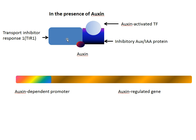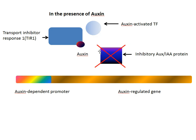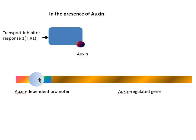In fact, TIR1 is part of the ubiquitination process, and it tags the inhibitory auxin IAA protein for degradation. So this protein will be degraded by the proteasome, thus releasing the auxin-activated transcription factor. This transcription factor, which is no longer bound to the inhibitory protein, can now bind to the promoter and start the transcription of the auxin-regulated gene.